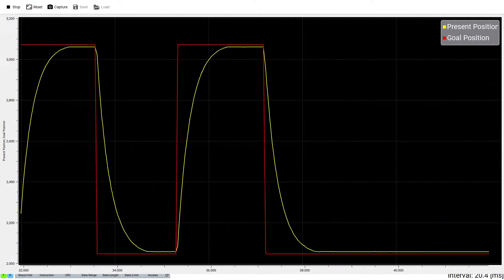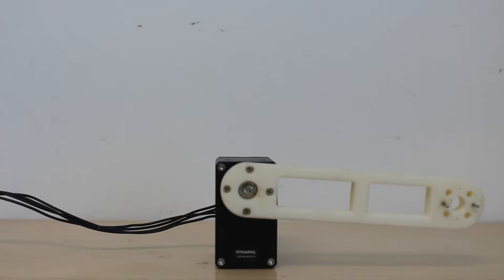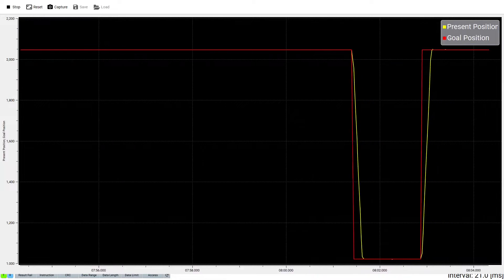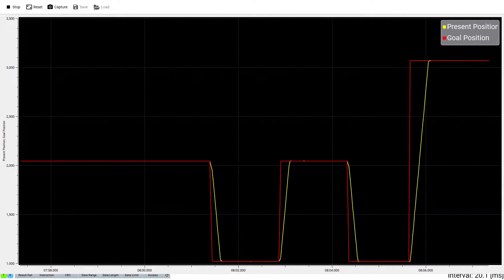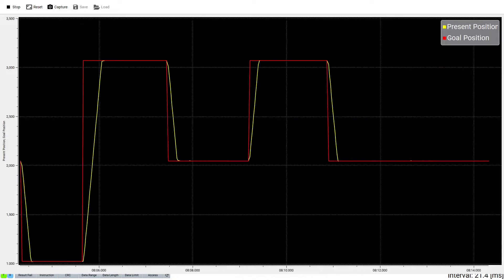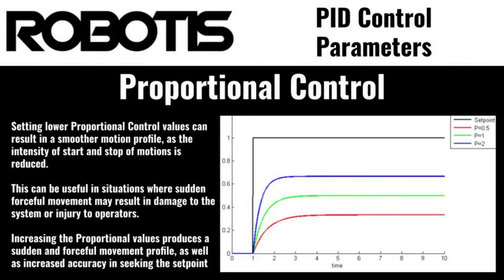If we instead adjust our P gain to 8000, we'll see that the robotic motion profile has been magnified a hundredfold. The initial acceleration is still very aggressive, and now the actuator continues to move at maximum speed until it arrives exactly at the goal position, where it stops immediately. With this higher value, the final resting position is exactly on the goal, as the actuator doesn't begin decreasing its movement until it's arrived exactly where specified. Setting P gain too low may result in the actuator stopping just short of our desired goal position.